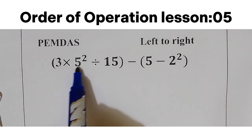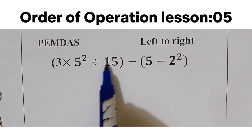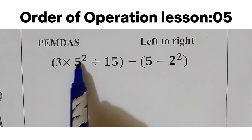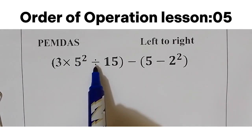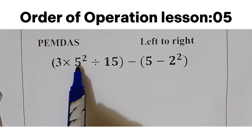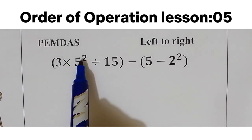So inside the parentheses we have different operations that we are going to start with. Inside the first parentheses we have multiplication, exponent, and division. According to PEMDAS, we are going to start with exponent, so I will start with 5 square.